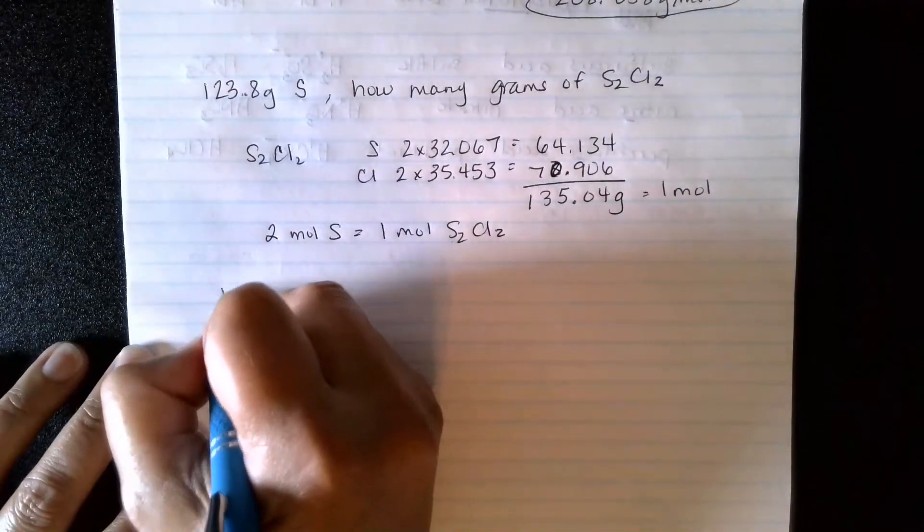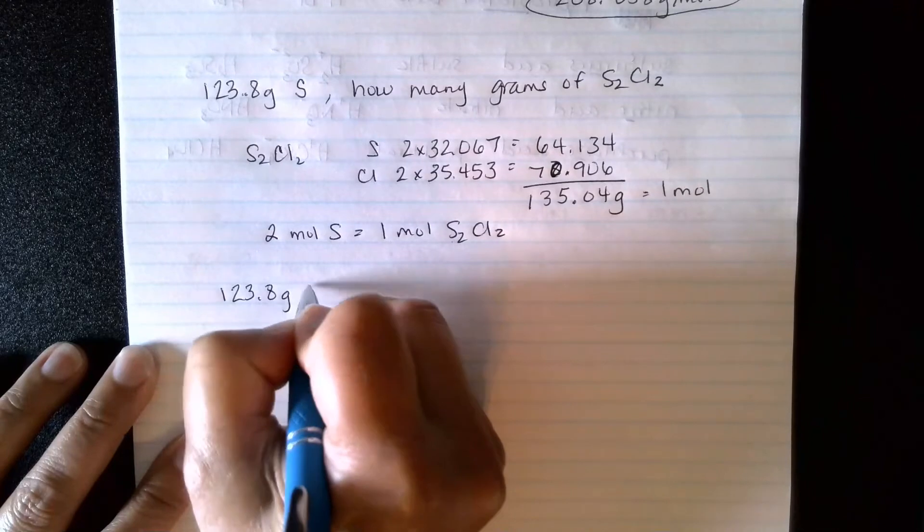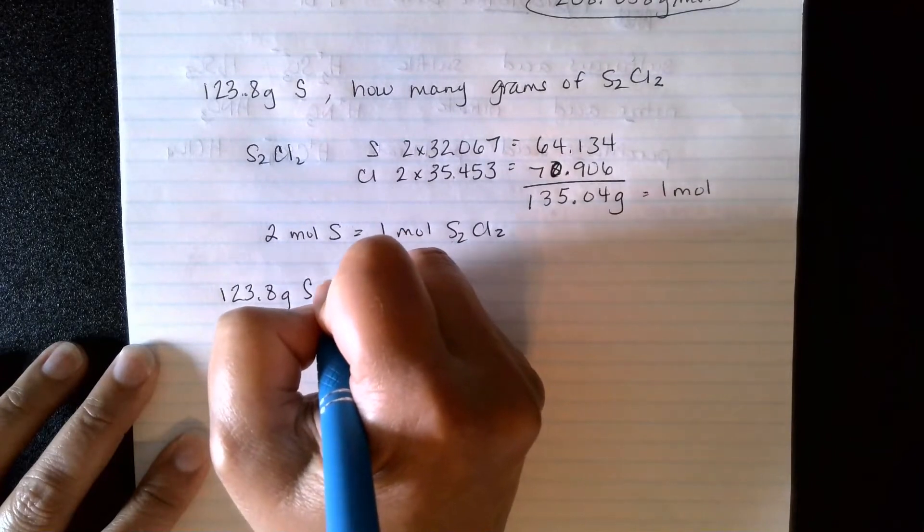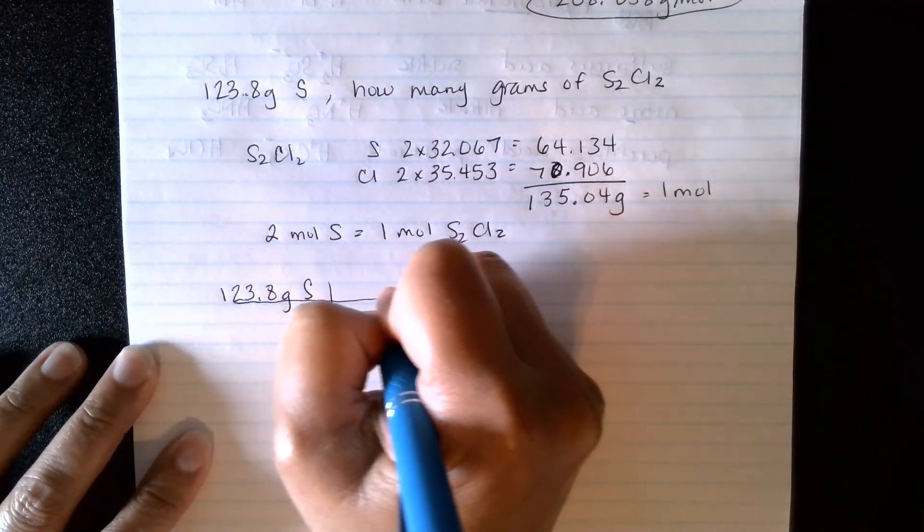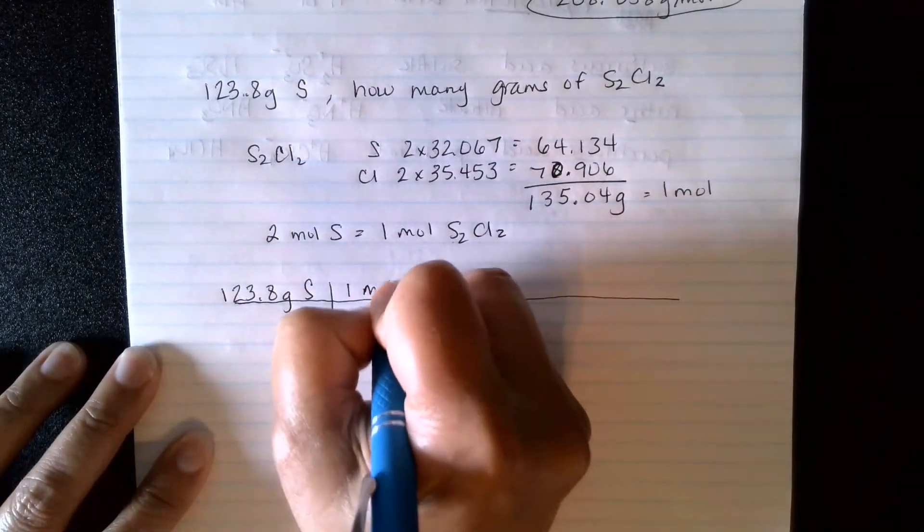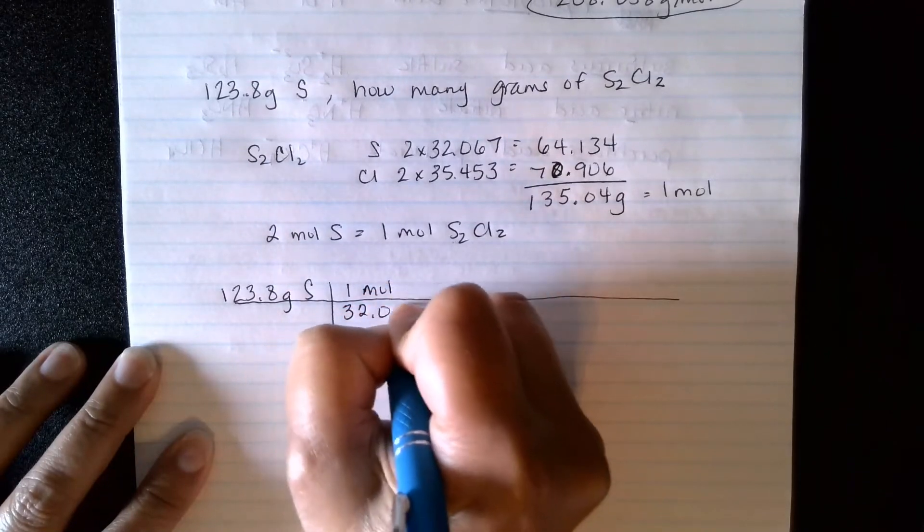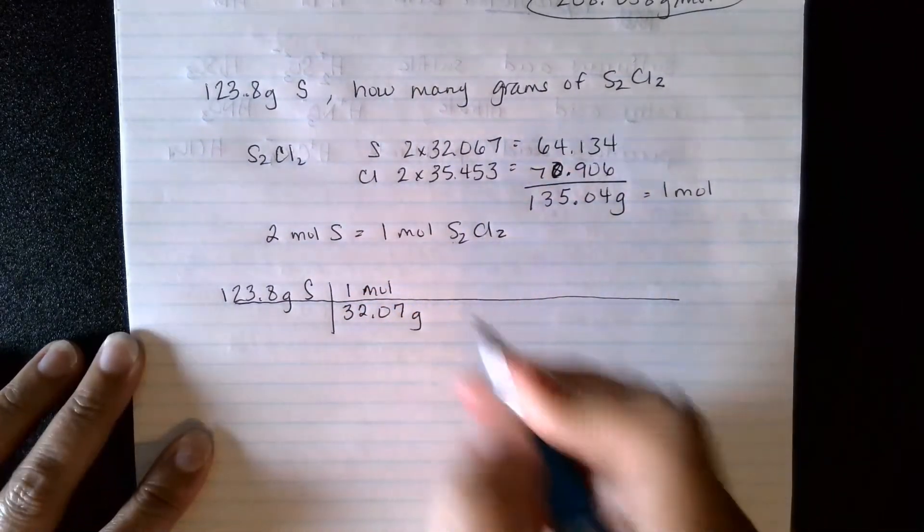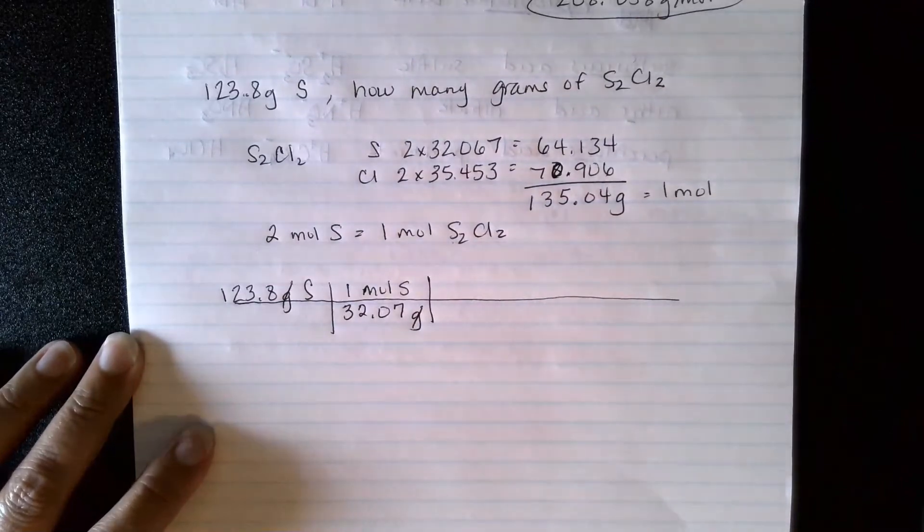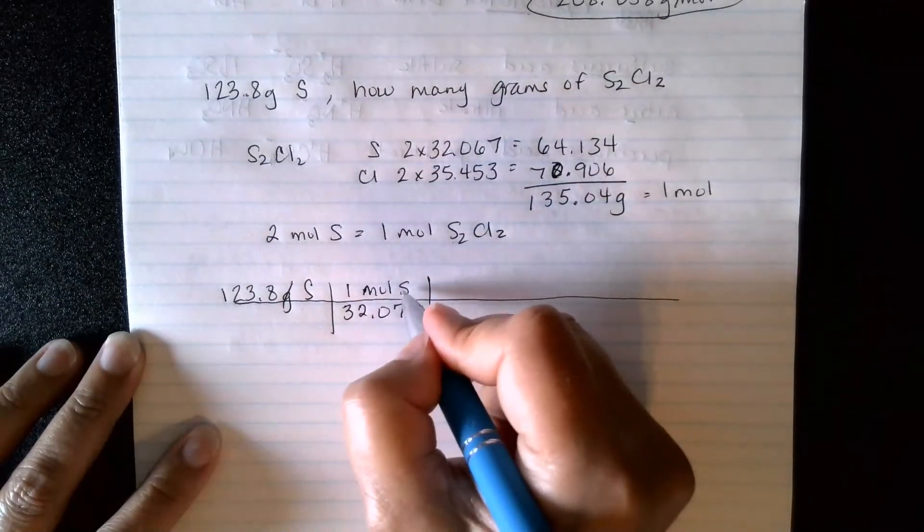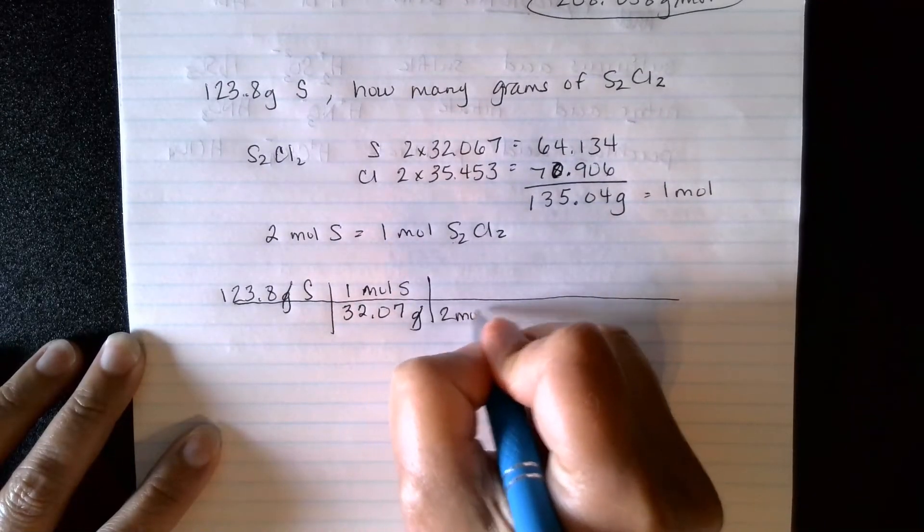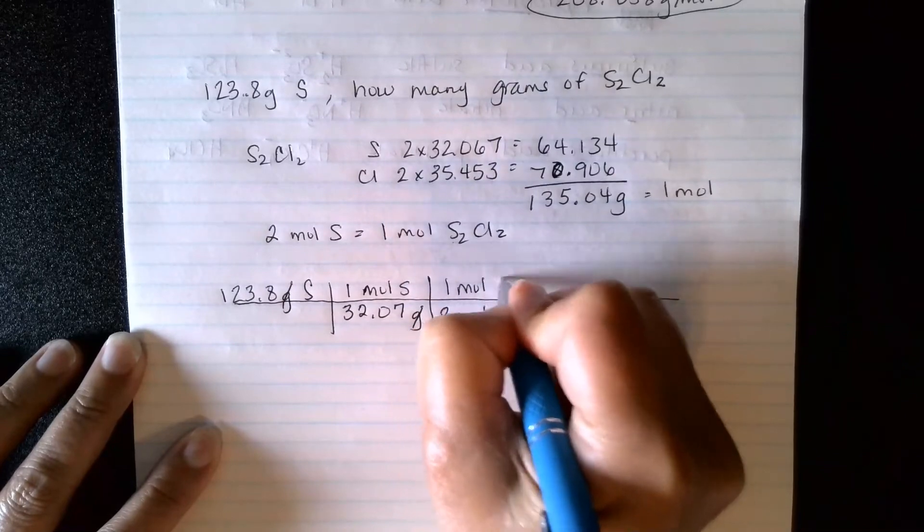Alright, so the only number I was given was this 123.8 grams of sulfur. Okay, so the first thing I'm going to have to do is change that to moles, and I already know the molar mass of sulfur. For sulfur, I know that one mole is 32.07 grams. And that I just got off the periodic table. Okay, now I have moles of sulfur here, so I'm going to put moles of sulfur here. And I have two moles of sulfur for every one mole of S2Cl2.